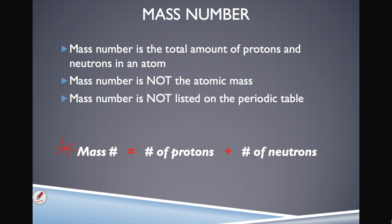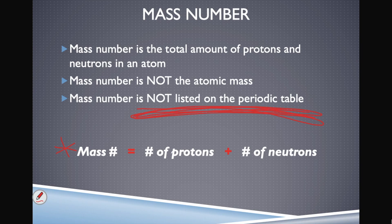The mass number is not the atomic mass. You'll look on the periodic table and find atomic masses — the numbers listed with two digits after the decimal. Do not say that is the mass number of the atom. It is not.